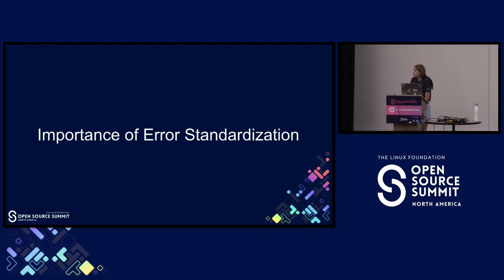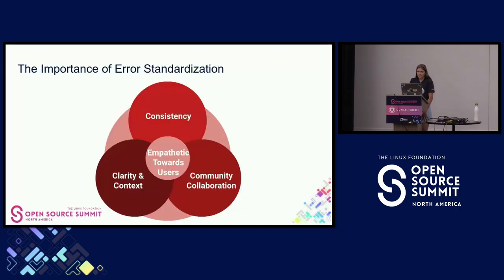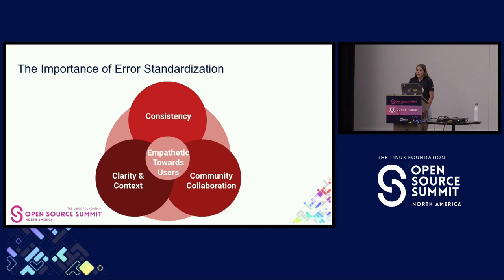But that brings us to the importance of error standardization. It's important to return back to our users a very consistent, reliable, and enriched error to enable a smoother debugging process — one that gives them additional context and clarity as to what the error is about. Maybe what app ID is involved, the resource type, the environment, etc. And the same way that our users can expect that standardized error, it actually enables community collaboration because the error is written in a very standard and common format. All of this leans towards being more empathetic to our users.